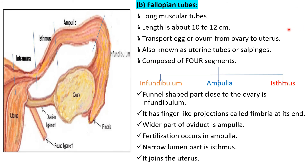The next part of the female reproductive system is the fallopian tubes. A pair of fallopian tubes is present. The length of each fallopian tube is 10 to 12 cm. The main function of the fallopian tube is to transport the egg or ovum from the ovary to the uterus. Fallopian tubes are also known as uterine tubes or salpinges.